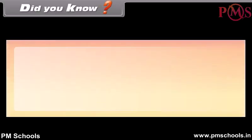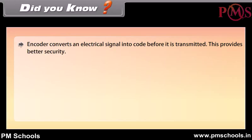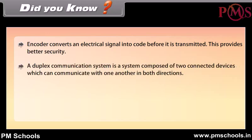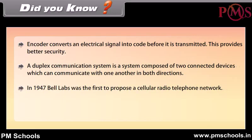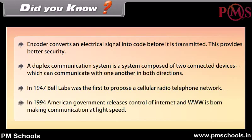Did you know? An encoder converts an electric signal into code before it is transmitted, providing better security. A duplex communication system is composed of two connected devices which can communicate in both directions. In 1947, Bell Labs was the first to propose a cellular radio telephone network. In 1994, the American government released control of the internet, and the World Wide Web was born, making communication at light speed.